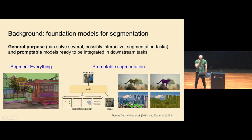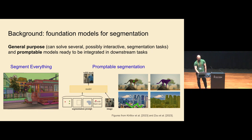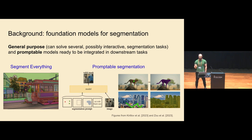The second aspect of these foundation models is that they are promptable — the user can adapt the same model to different tasks just by giving different prompts. There are different modalities of prompts: points, boxes, generic shapes, text, or even audio. The model combines these prompts with the image and returns segmentation. One nice application is interactive segmentation, where the user gives a prompt and if the proposed mask isn't what they want, they can give another prompt — and this is very fast.